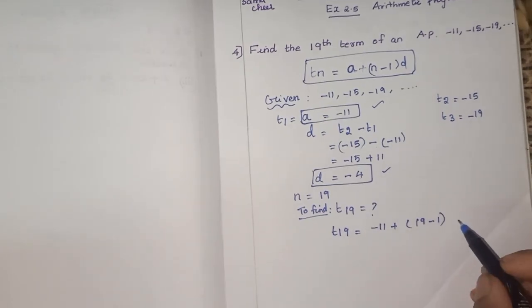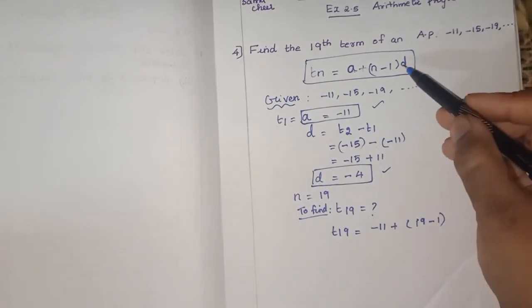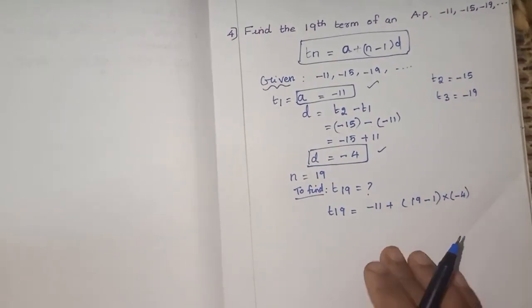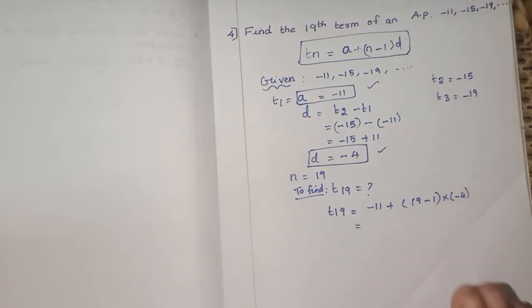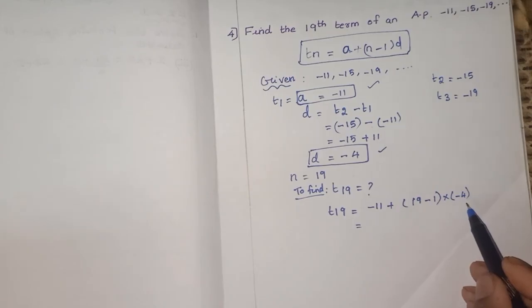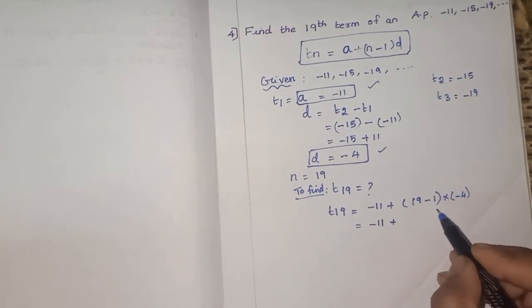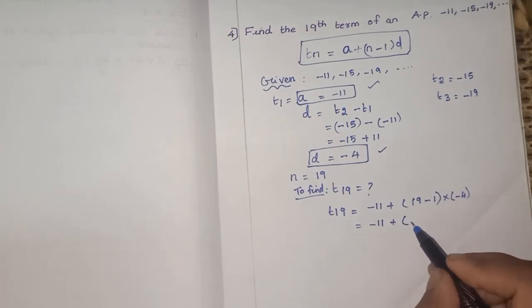N is 19, so 19 minus 1. What is our D? Put it in the bracket, you have to be very careful. This is multiplication, into, into minus 4. Now we are going to solve this. Here only many students will make a mistake. So here you have to put into minus 4, don't forget. So minus 11 plus, what is 19 minus 1? That is 18. Put it in the bracket, so into minus 4.